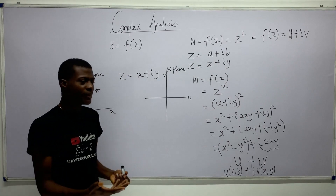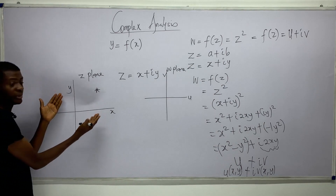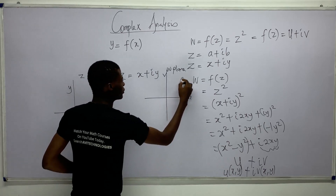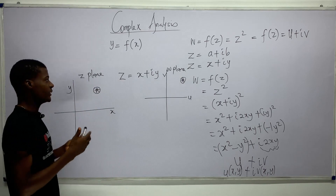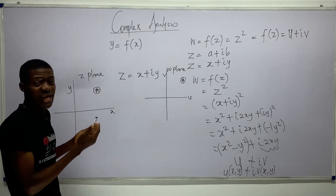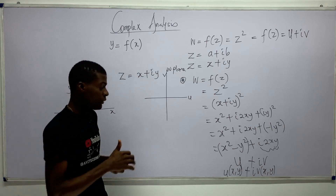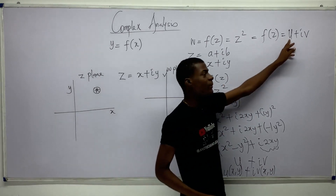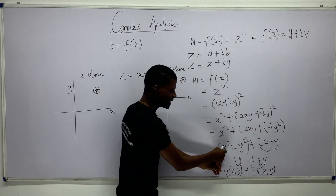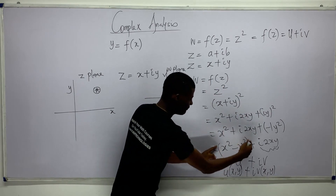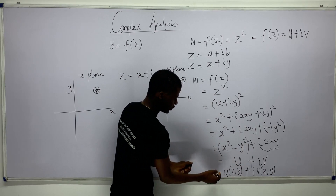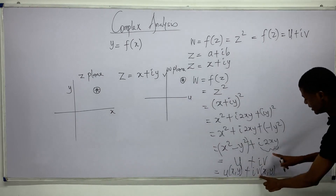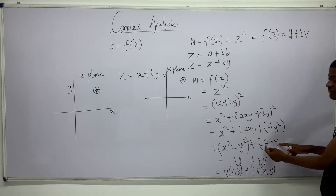Then I draw the w-plane, with axes u and v, because the w-plane is defined by u and v. These are just variable names we choose for our results — for the z-plane we use x and y, for the w-plane we use u and v. Now if x and y are numbers, evaluating u gives a specific number, and evaluating v also gives a specific number.